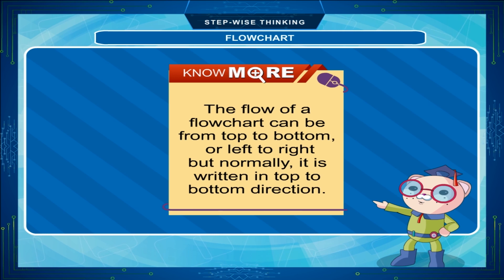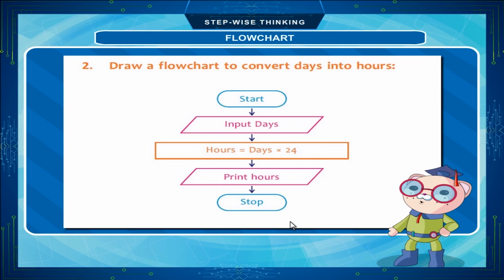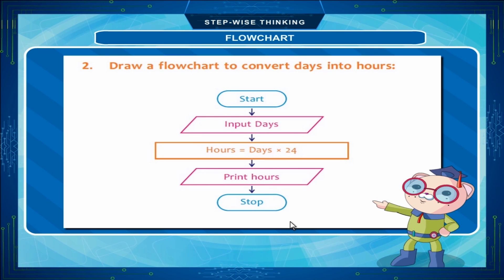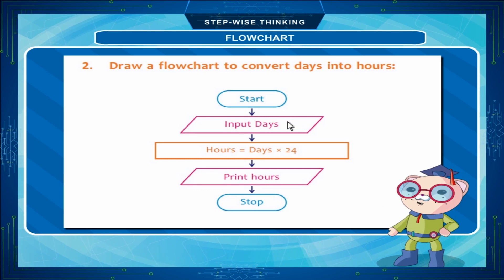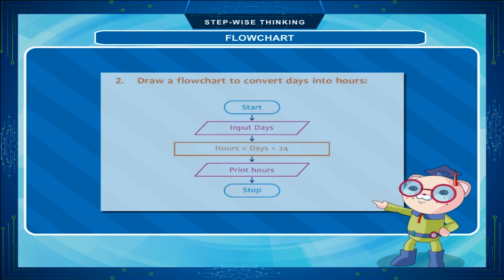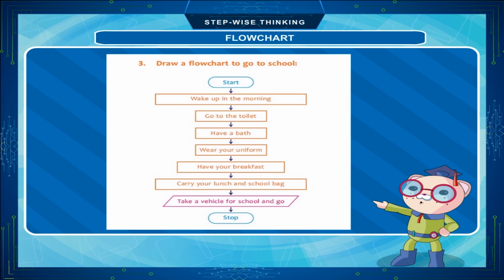But normally, it is written in top-to-bottom direction. Example 2: Draw a flowchart to convert days into hours. Start → Input days → Hours = days × 24 → Print hours → Stop.